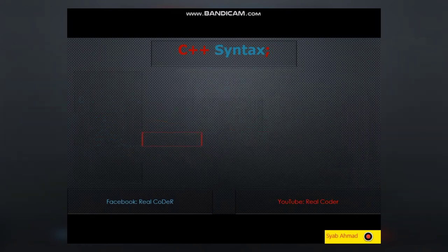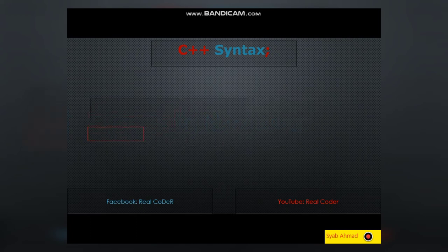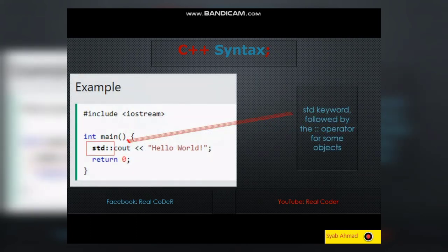Omitting namespace: you might see some C++ programs that run without the standard namespace library. The using namespace std line can be omitted and replaced with the std keyword, followed by the :: operator for some objects.